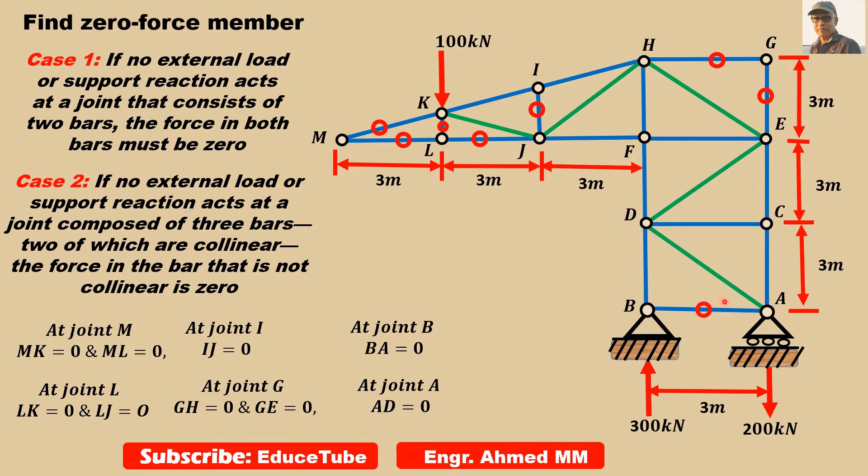As the component is zero, the main member AD will also be zero. Because its component is zero, AD will be zero. That's why I wrote here AD equals zero.